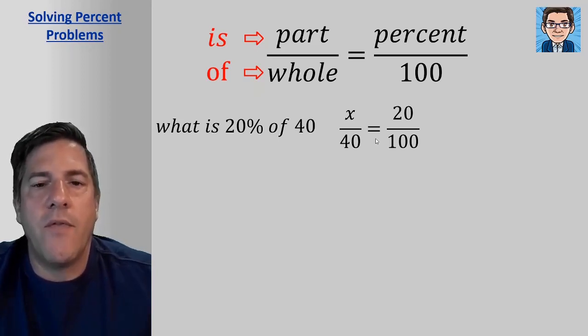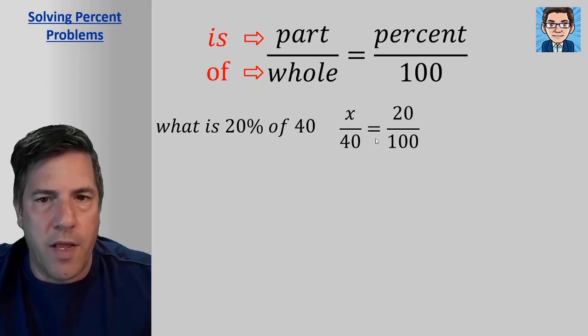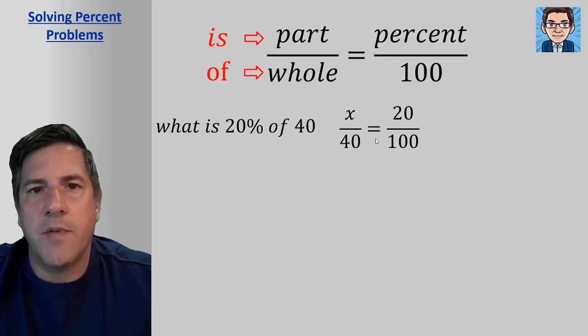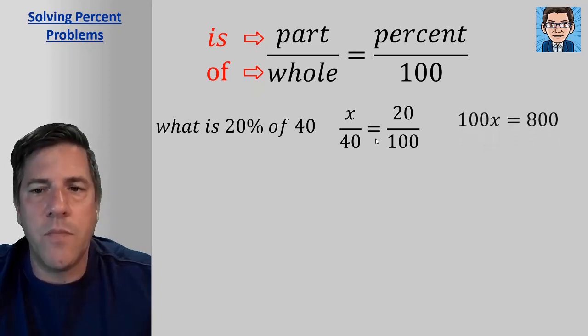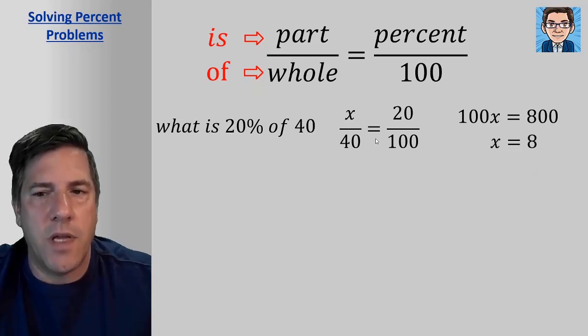So now to solve for x, we've got to cross multiply here. So we're going to multiply the x times the 100 and the 40 times the 20 and set them equal to each other. So we get 100x equals 800. To solve for that, we just divide by 100 and get x equals 8.